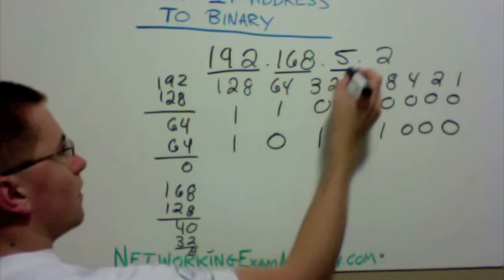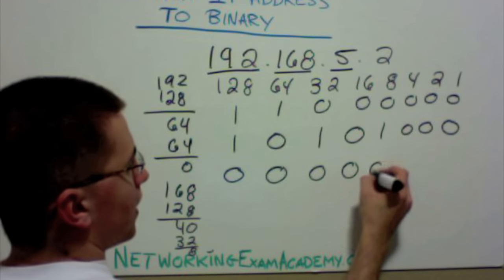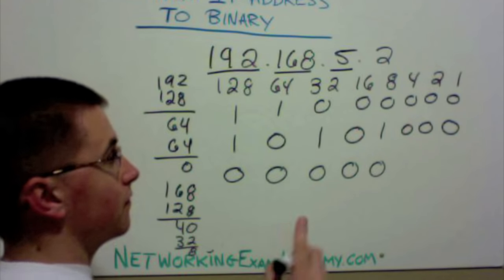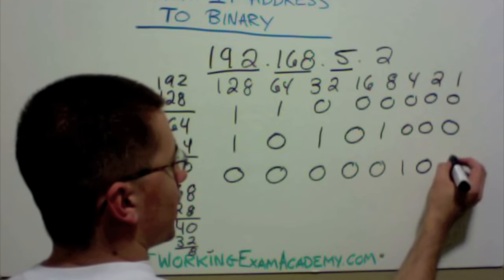Now let's do 5. 128, 64, 32, 16, 8 do not go into 5. 4 does. 1, remainder of 1, 0, and 1.